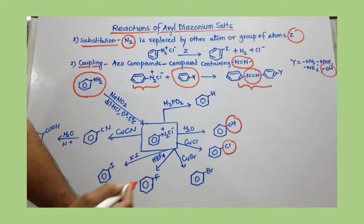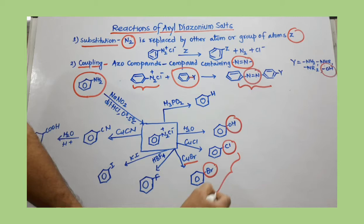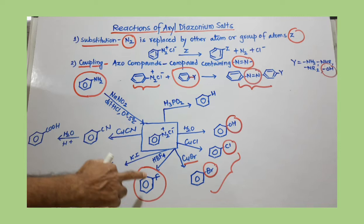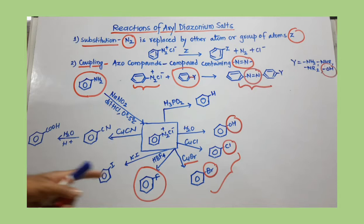When cuprous chloride (CuCl) is added, N₂ is replaced with Cl and chlorobenzene is prepared. Using CuBr, bromine is introduced to prepare bromobenzene. These are called Sandmeyer reactions. You can also prepare fluorobenzene, which is not possible by any direct method — here you diazotize and go indirectly, using HBF₄ (fluoroboric acid).